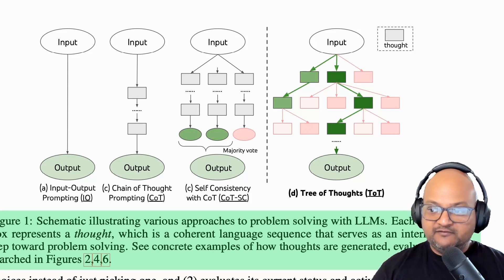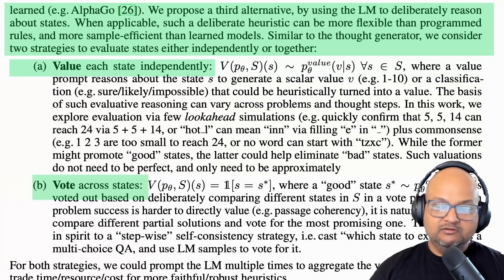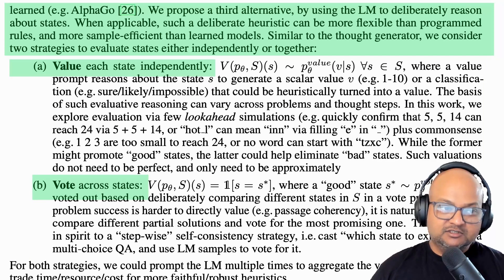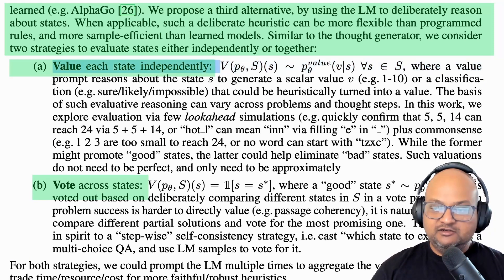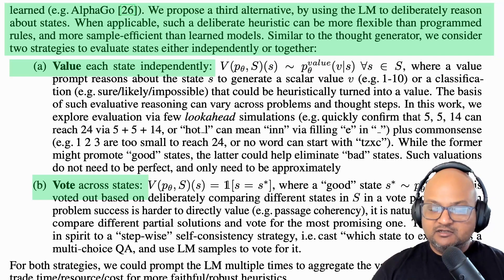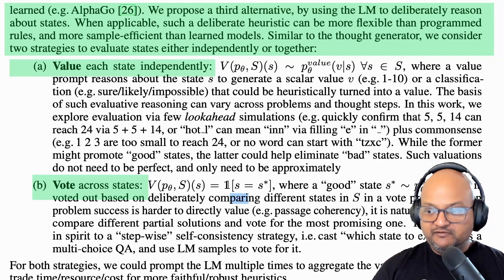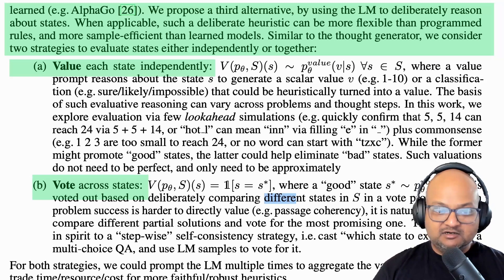One very important notion when you have a tree of thoughts is to also have a measure of which tree is looking more promising — a measure of which path gives you a more effective or better solution. The authors propose two different heuristics for this. One way is to assign a value to each node in the tree by asking the LLM to consider that current thought and value each intermediate step. The second option is to look at a number of different states or nodes in your tree of thought and then vote across all of them to see which one is more effective. You can again construct a prompt to do this.